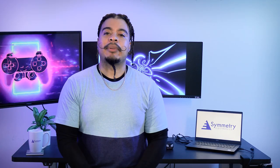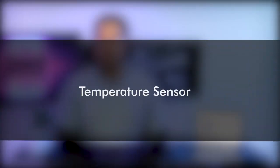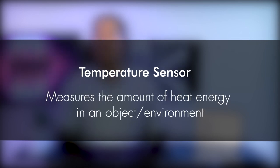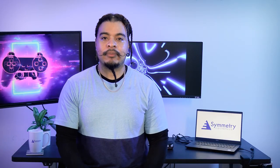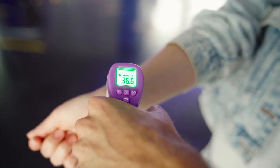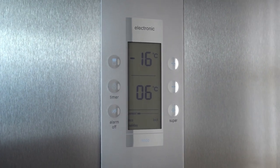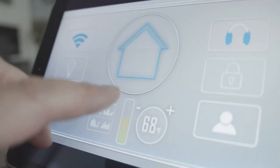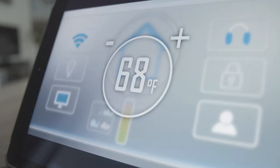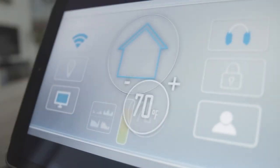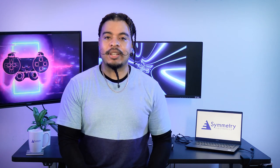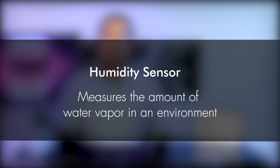The first type of sensor we'll touch on today is the temperature sensor. Temperature sensors are all designed to measure the amount of heat energy in an object or environment and then convert that into a readable number. Temperature sensors are used almost every day in your daily life, such as in refrigerators, weather sensing, agriculture, and electronic devices. In fact, whatever electronic device you're on now has some kind of temperature sensor. It's common for a temperature sensor to be combined with a humidity sensor, which measures the water vapor in an atmosphere.